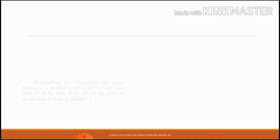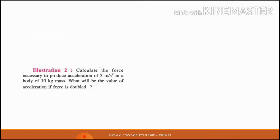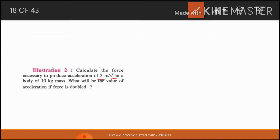Now move to the second example. Calculate the force necessary to produce an acceleration of 3 meter per second square in a body of 10 kg mass. What will be the value of acceleration if the force is doubled? यहाँ पे body का mass 10 kg है और उसमें 3 meter per second square का acceleration produce करना है। अगर हम force को double करेंगे तो acceleration की value कितनी होगी — let's see the solution.